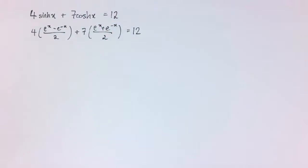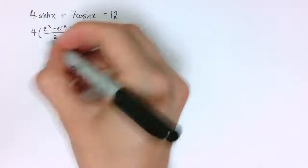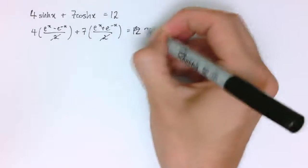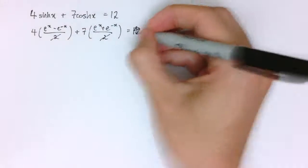So substituting in the definitions we get that. I multiply all by 2 just to tidy it up a little bit so I'll get rid of these 2's here and I'll have 24 on the right hand side instead.